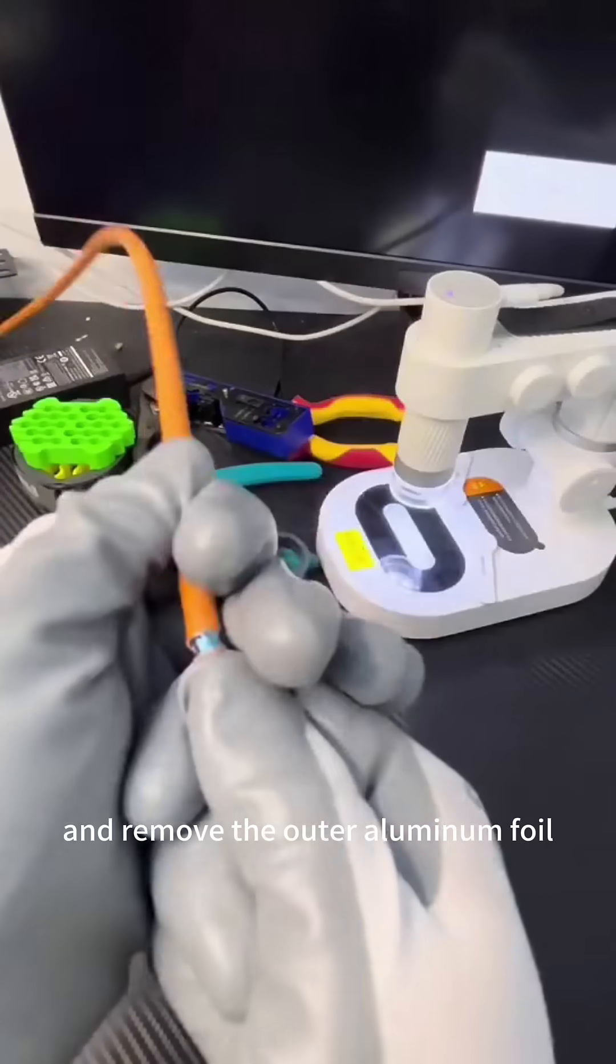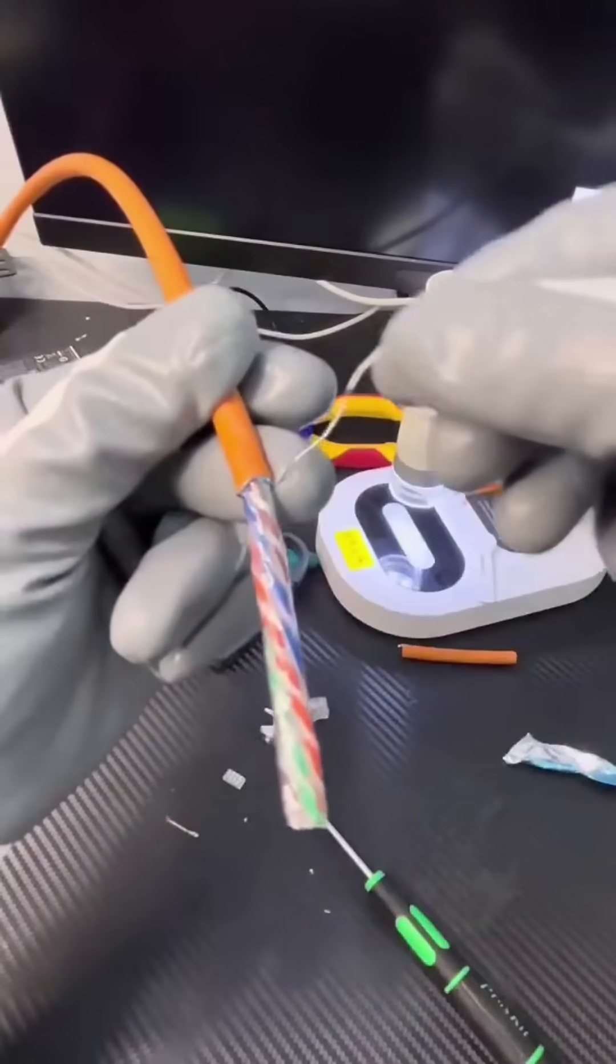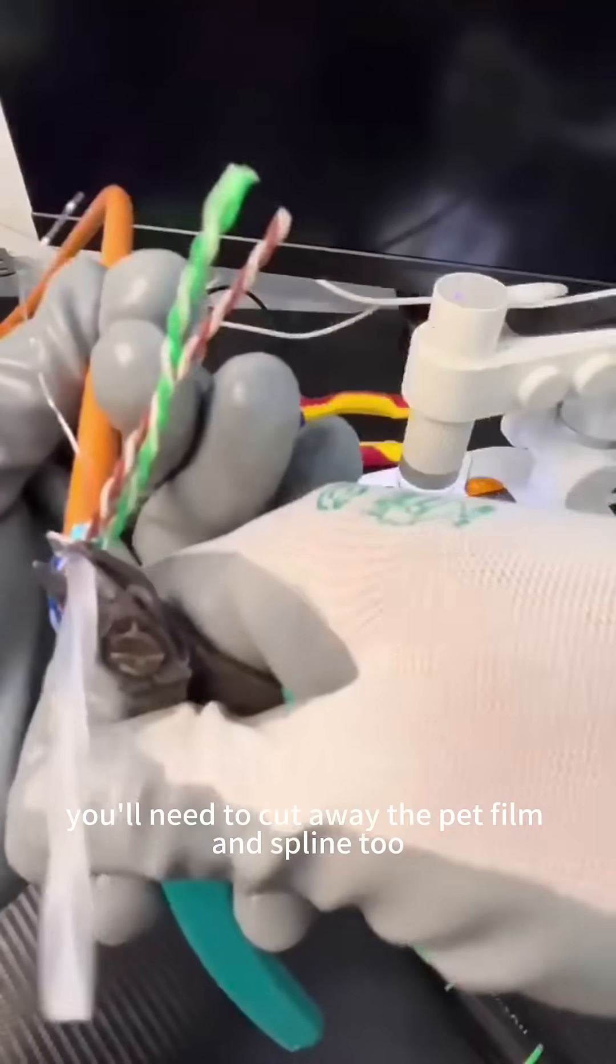First, strip the cable jacket and remove the outer aluminum foil, but keep that thin metal drain wire. You'll need to cut away the PET film and spline too.